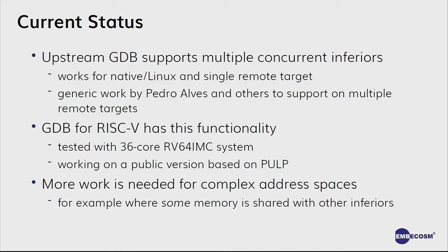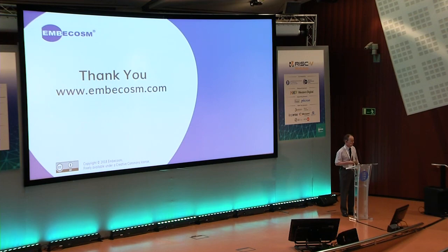So that's where we're heading. A lot of that is already upstream — GDB supports multiple concurrent inferiors for native Linux and for a single remote target. We're working to move forward with Pedro Alves on multiple remote targets, so you can have several connections to different things that all form part of the same platform. GDB for RISC-V has that functionality as far as it is upstream. We've tested it with a 36-core RV64 bare metal system and are working on a public version based on a bare metal PULP system. More work is still needed on complex address spaces, and we're fortunate to have customers who are very clear they want this upstream.